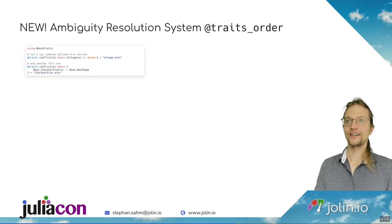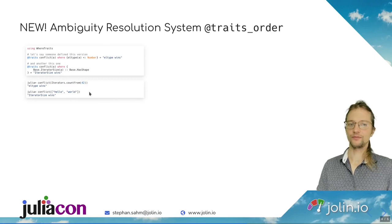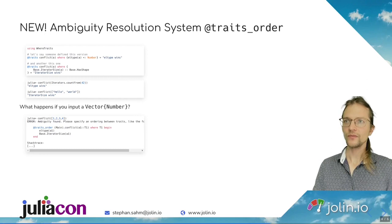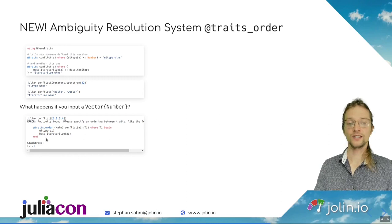So let's check that one. We have another example here. We define a function called conflict where the trait on element type and iterator size has shape. The one has the implementation element type wins and the other iterator size wins. If we call this, we see that it just works. But of course, there's a conflict sitting behind. This is the vector of number. Since the last version, we have a really nice error message. It mentions that the ambiguity was found and it even tells us how we can resolve it, namely with a new macro called traits_order.